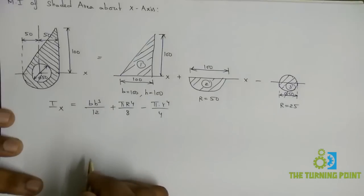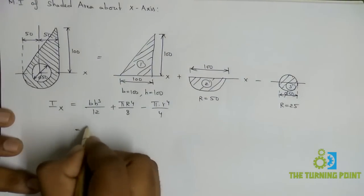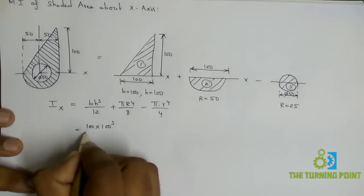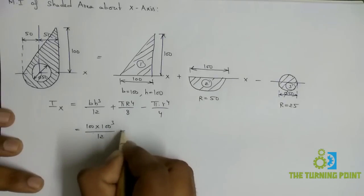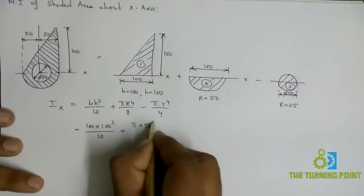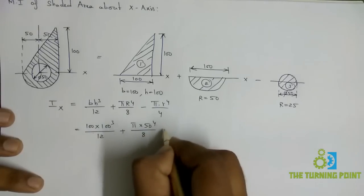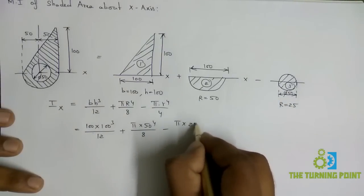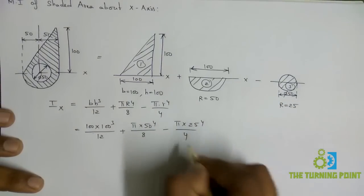Substituting the values: 100 × 100³/12 plus π × 50⁴/8 minus π × 25⁴/4.